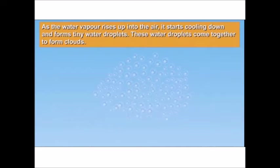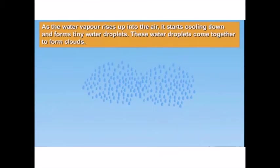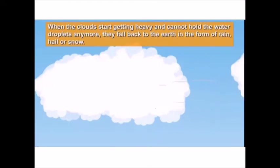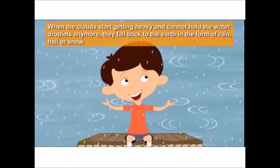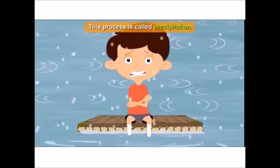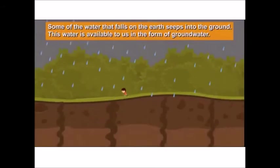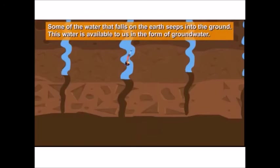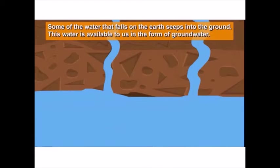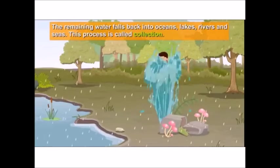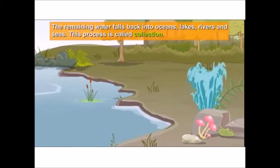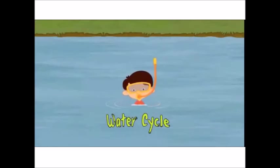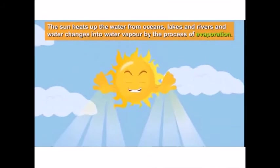As water vapor rises into the air it starts cooling down to form water droplets, which come together by wind and condense to form a cloud. When too much water accumulates, the clouds become heavy and cannot hold water droplets anymore — they fall back to earth as rain, hail, snow, or dew. This is called precipitation. Some water seeps into the ground as groundwater, available from wells and tube wells. The remaining water falls back into oceans, lakes, rivers, and seas — this is called collection. The sun then heats up this water again, and the cycle continues.